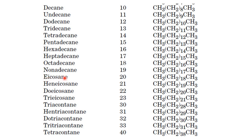After 20, the prefix used for 1 is hen-, and numbers from 2 to 9 are the same as you saw in 12 to 19: du- for 2, tri- for 3, tetra- for 4, penta- for 5, and so on. So 21 is called henicosane, 22 is called docosane (the 'ei' from icosane is mostly dropped), then tricosane, tetracosane, pentacosane, hexacosane, and so on.